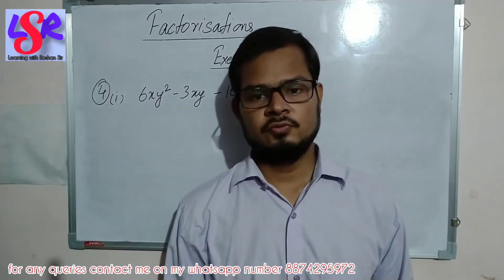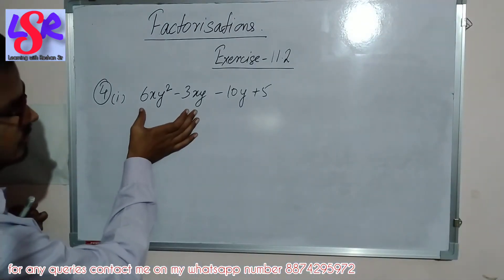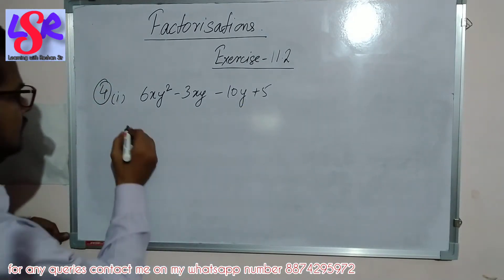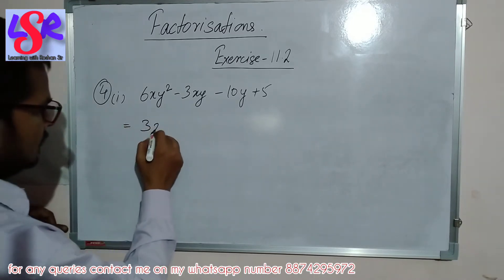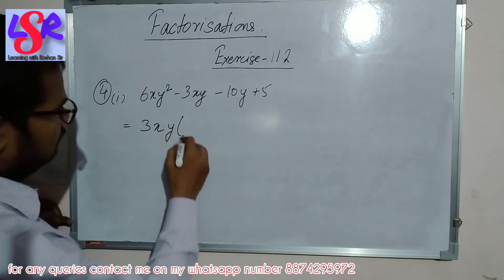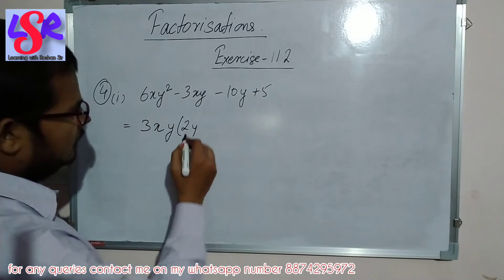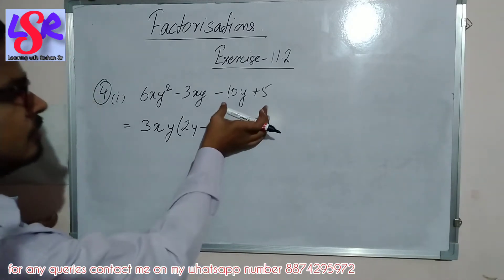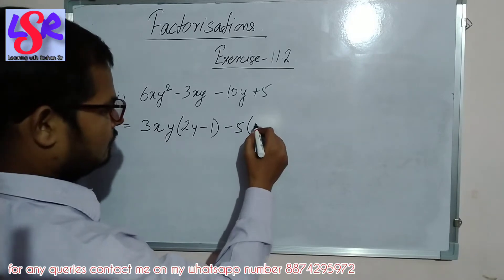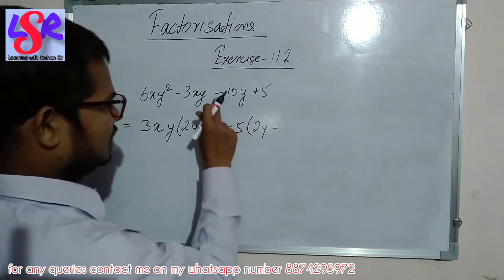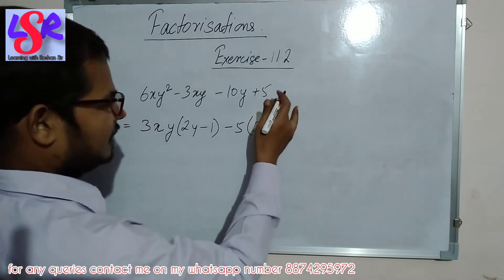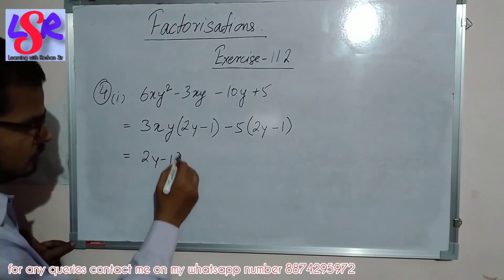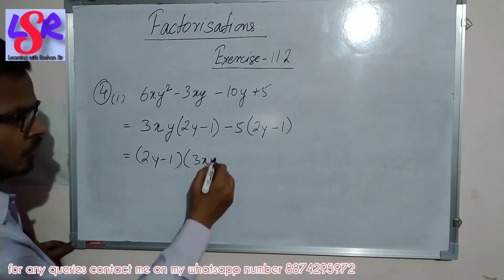Question number 4, first part — here we are having 6xy squared minus 3xy minus 10y plus 5. From the first two we take 3xy as common, leaving 2y minus 1. From the last two we take minus 5 as common; since we take minus common the sign changes, leaving 2y minus 1. The bracket is the same, so the answer is (2y minus 1)(3xy minus 5).